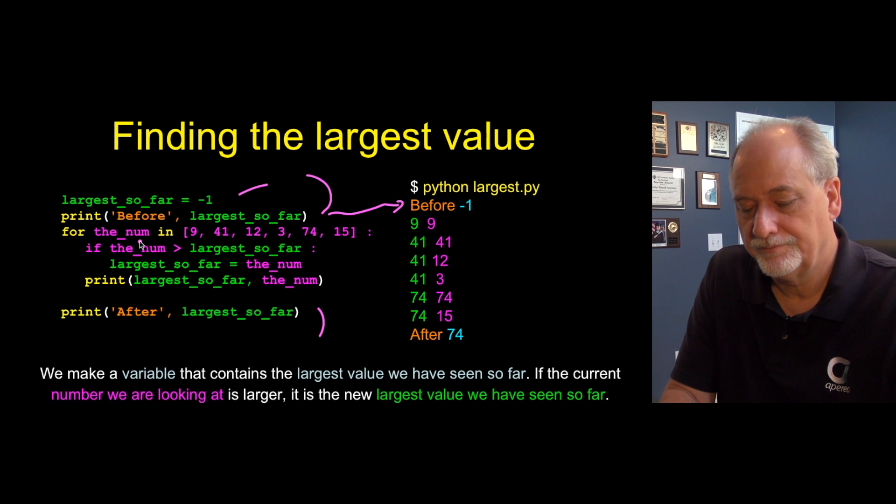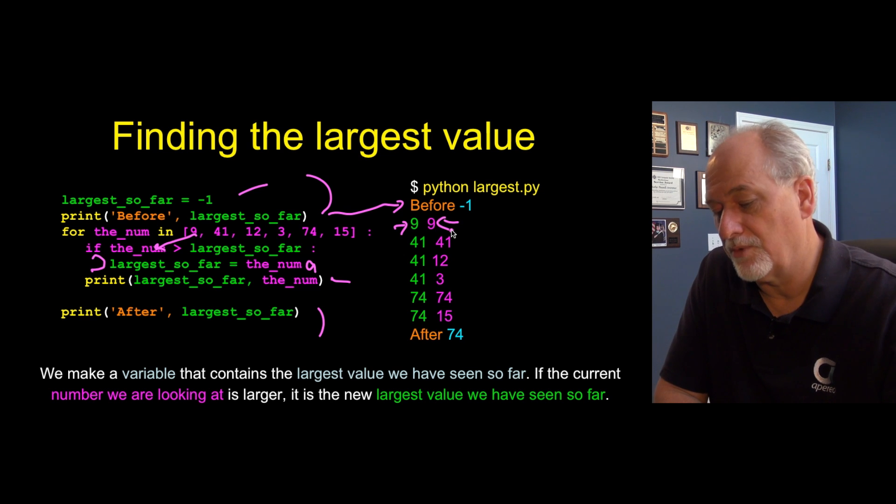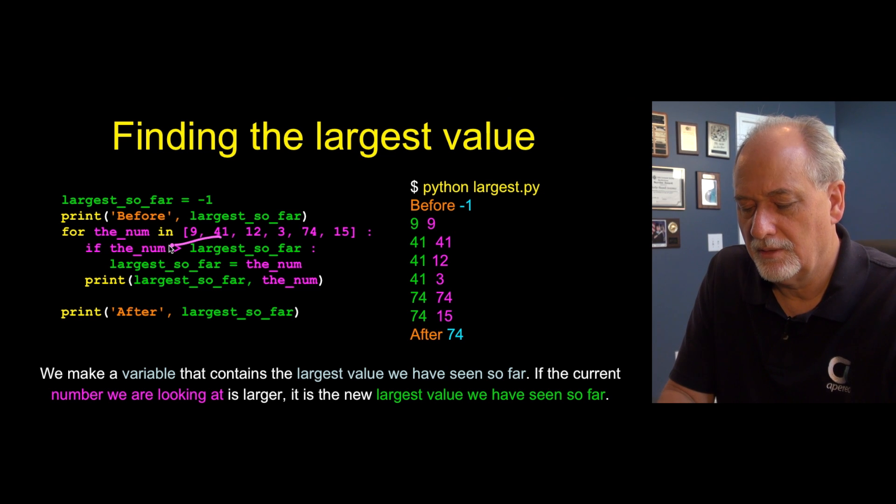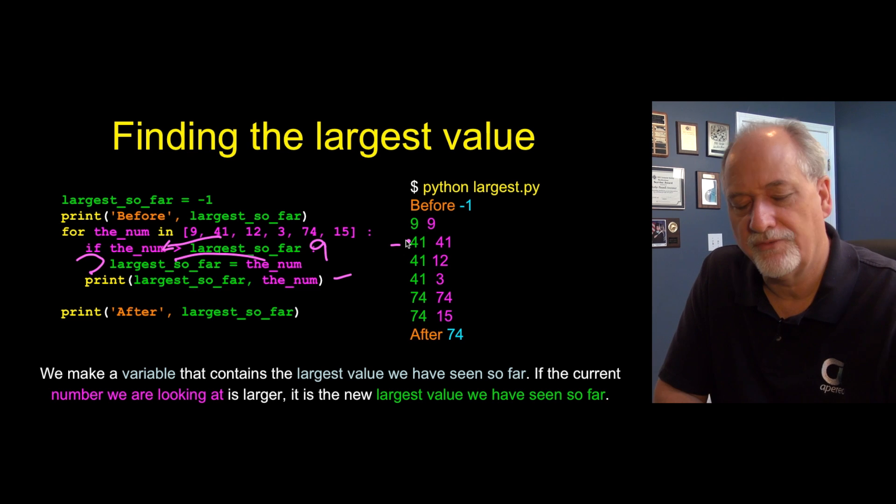So now the num—number underscores are okay—that's my iteration variable. If nine is greater than largest so far, well largest so far is negative one, so that's true. So this code's going to run. We're going to remember the new number, so this is nine. So nine ends up in largest so far, and then we print it out. Largest so far is nine after we saw the number nine. Then we do it again. So now 41 comes in, and is 41 greater than nine? The answer is yes it is. So we're going to run this code. Copy 41 into largest so far and then print it out. Largest so far is 41 after we saw the number 41.